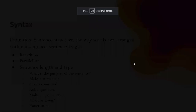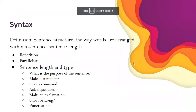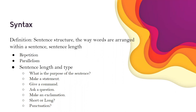The next device I want to review is syntax. The basic definition of syntax is the way words are arranged within a sentence, also the length of a sentence. Repetition is a form of syntax, so if things are repeating in the story, that's syntax and you should highlight it. Parallelism is when you have sentences that are kind of balanced on both sides — there isn't any parallelism in the story we're going to read. Sentence length and type also matter: is it making a statement, giving a command, asking a question, making an exclamation? Look at the punctuation — what do you notice about it? These are all things that an author does to use syntax to get their message across.